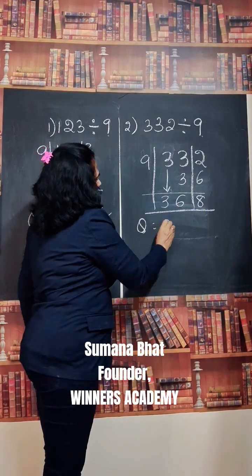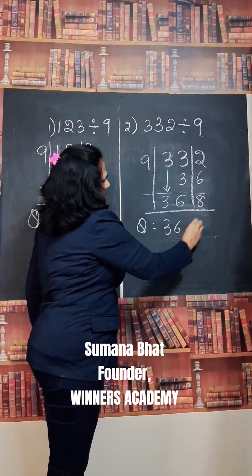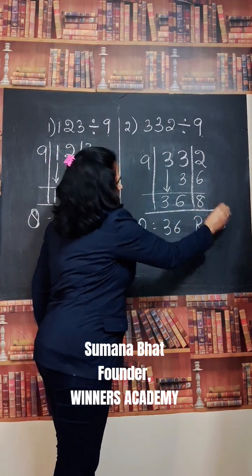So, answer is 36. Quotient is 36. Remainder is 8.